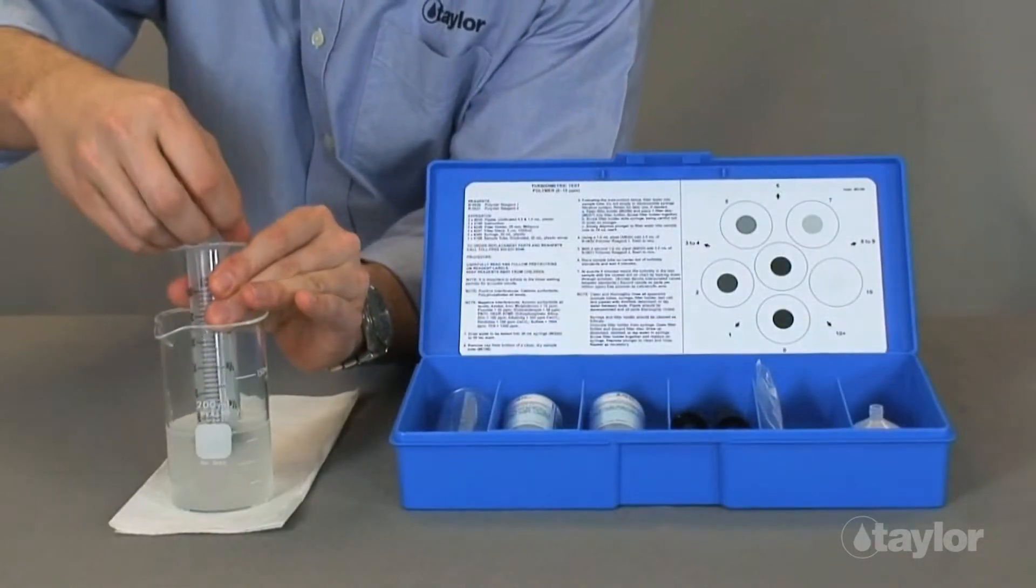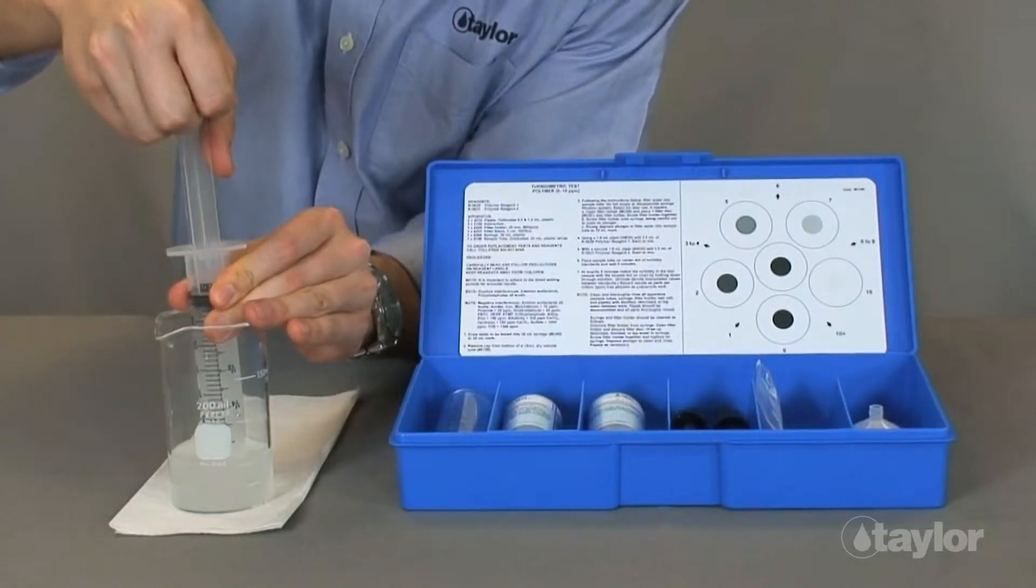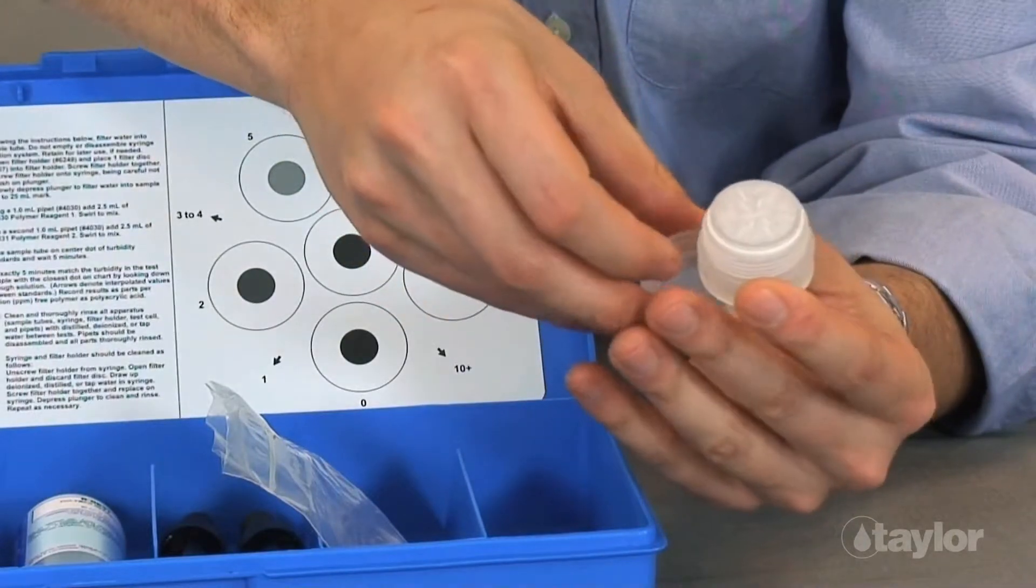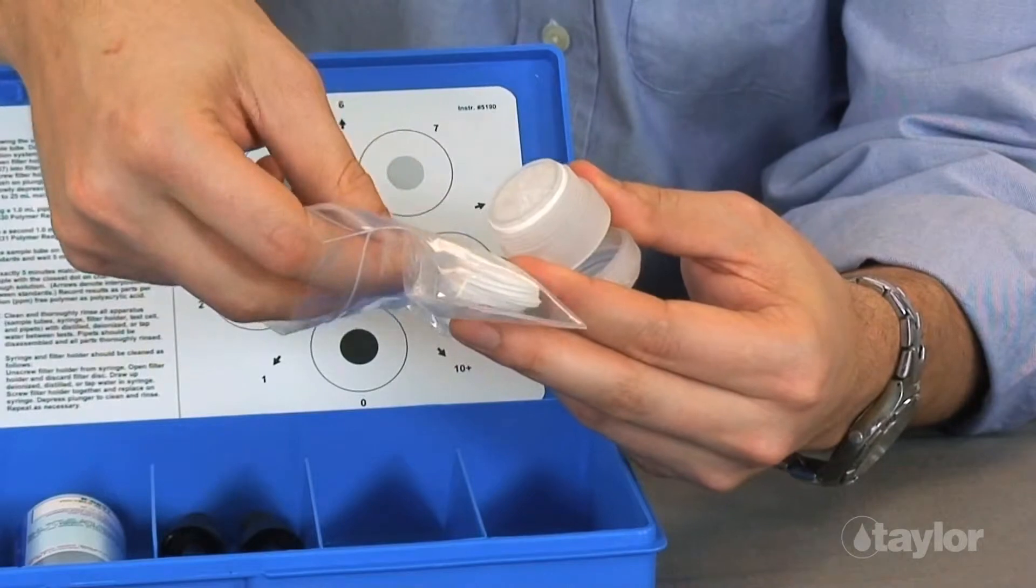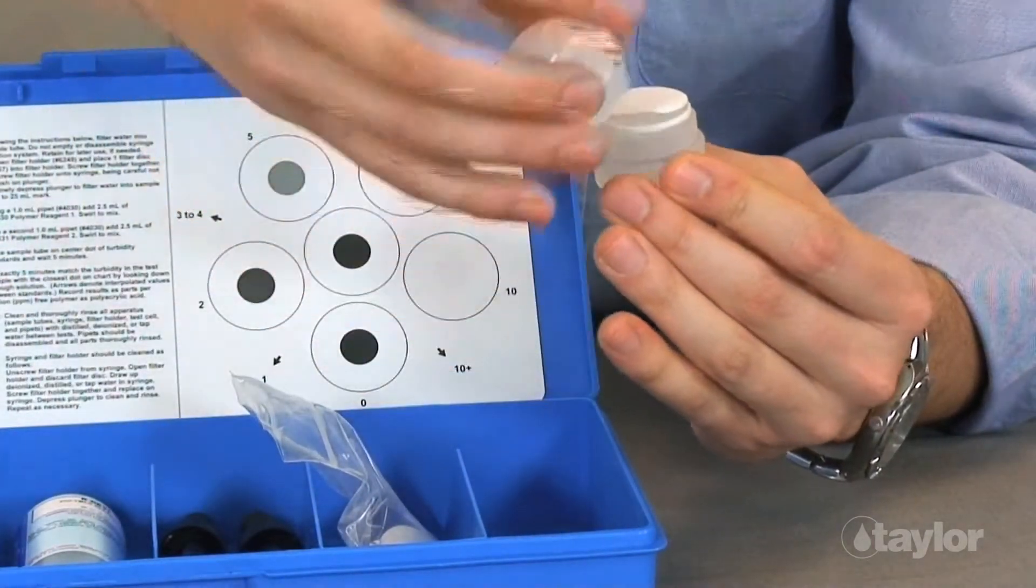Draw the sample water to be tested into the syringe filter to the 30 milliliter mark. Next, open the filter holder and place one filter disc into the holder. Close it.